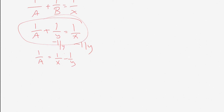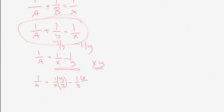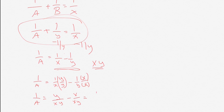Now, you don't want to just think that A equals X minus Y — it's a little more complicated than that. On the right side of the equation, we need a common denominator with X and Y, and that common denominator would be XY. So we have one over A equals — for one over X, we multiply by Y over Y — and for one over Y, we multiply by X over X. We have one over A equals Y over XY minus X over XY, which is just one over A equals Y minus X over XY.